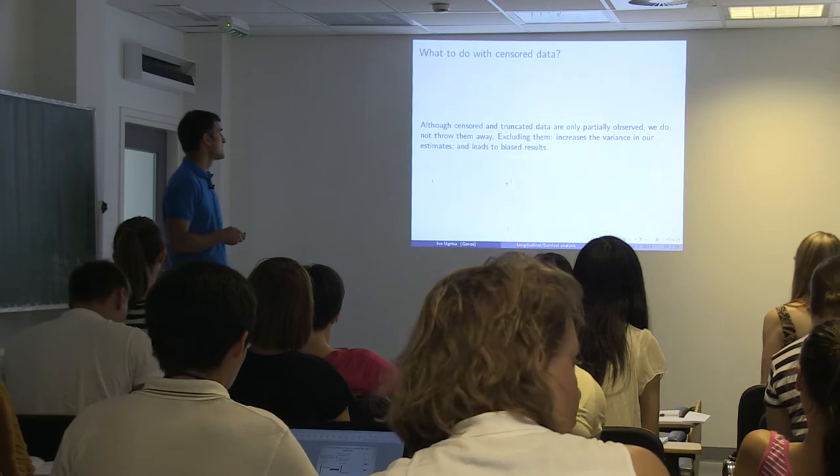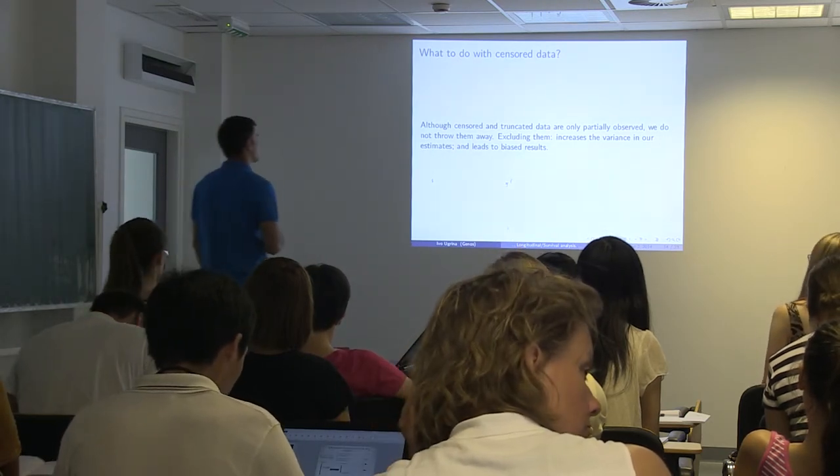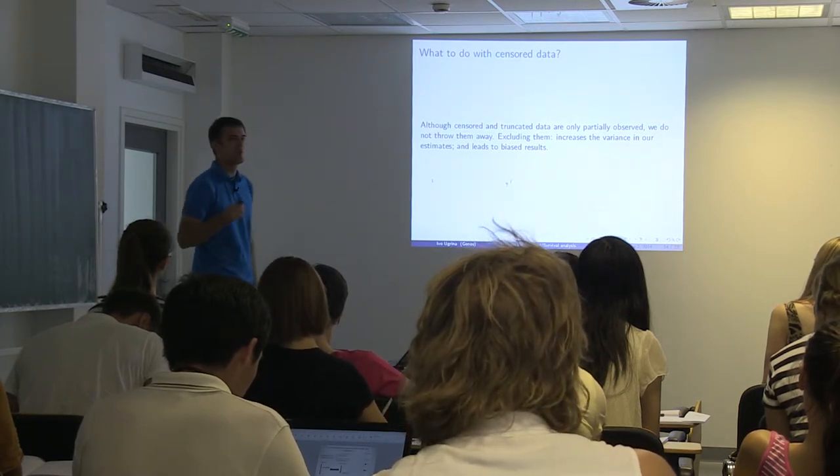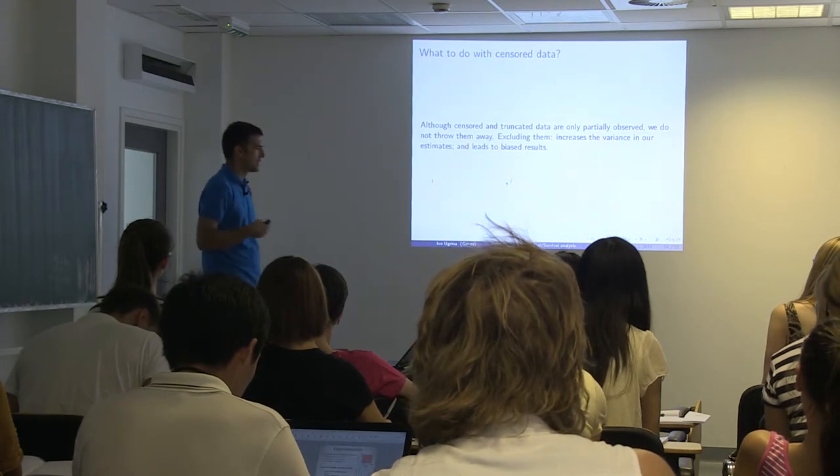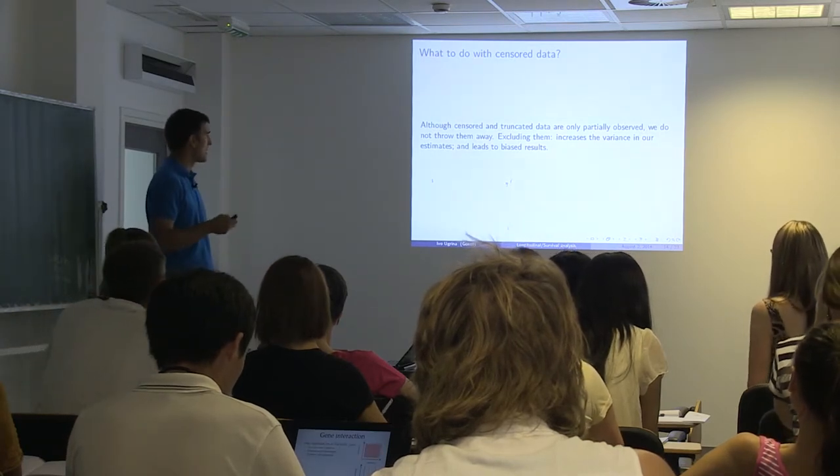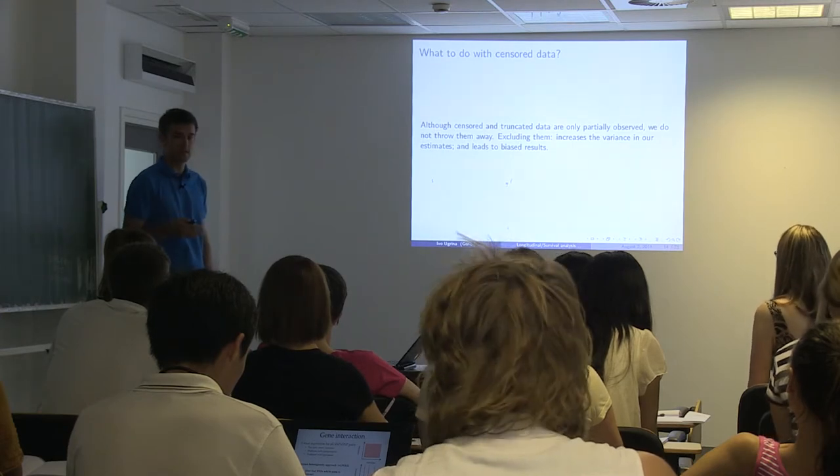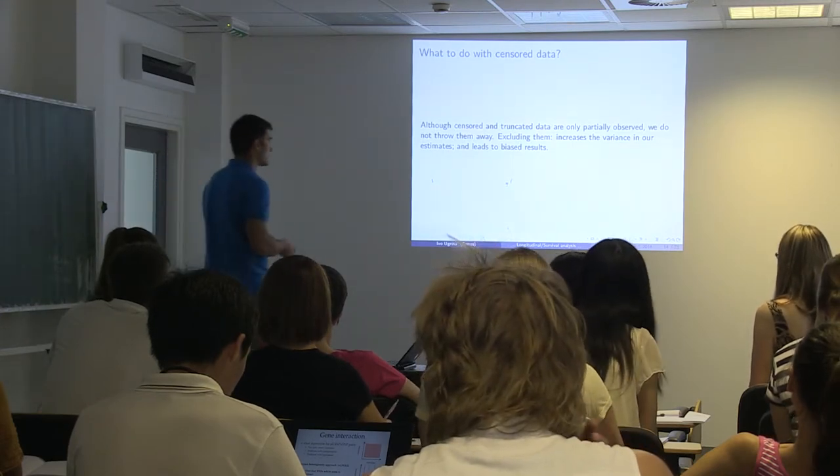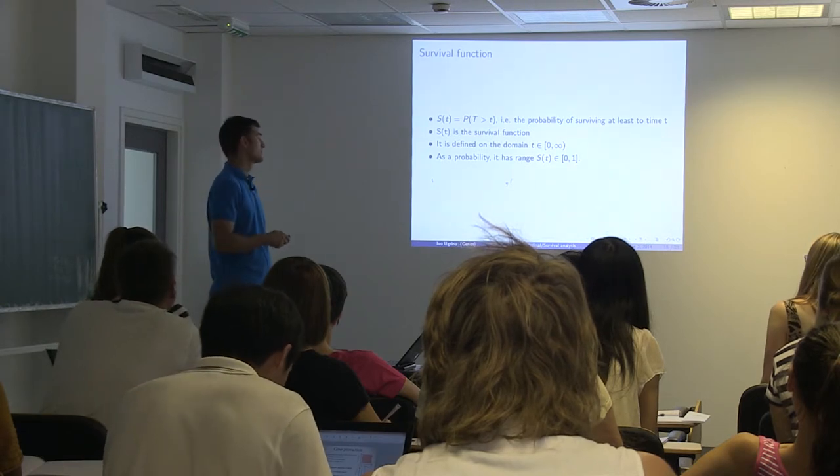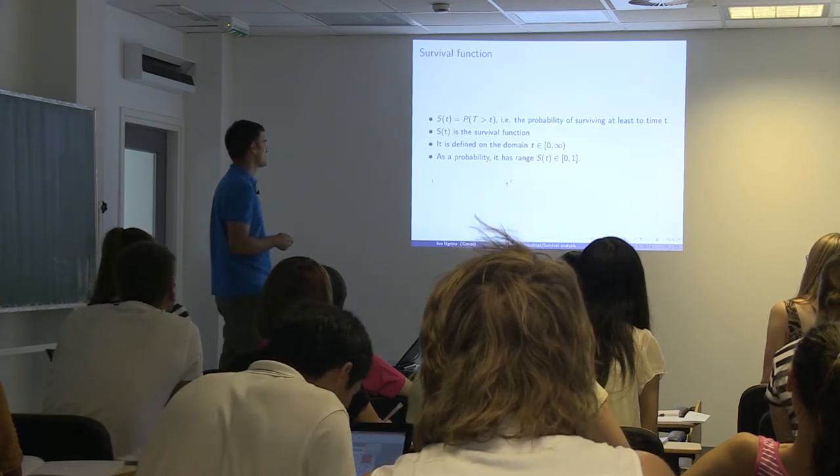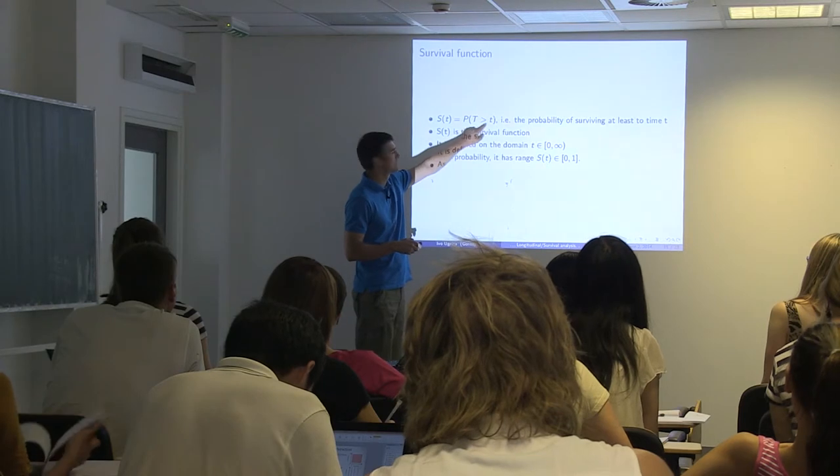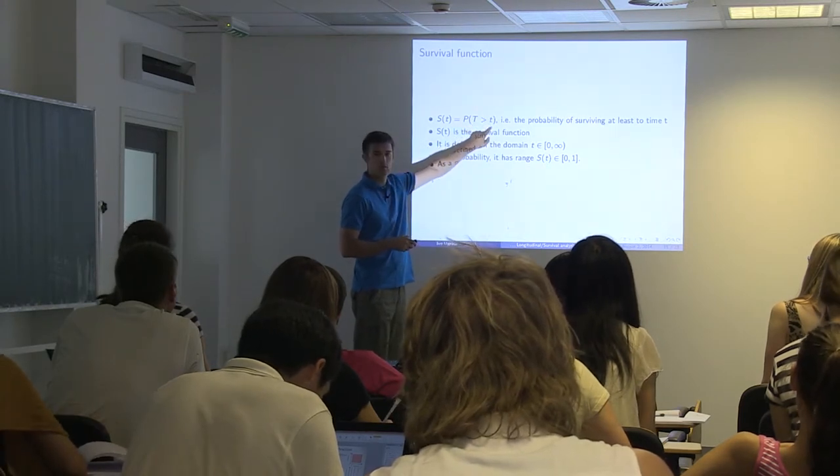What to do with censored data? Although censored data and truncated data are only partially observed, we do not throw them away as I said. Not only because you know something, also because some kind of mathematical and statistical methods are going to go wrong. For example, the variance in our estimates is going to increase if we decrease the sample size. And sometimes it leads to biased results.